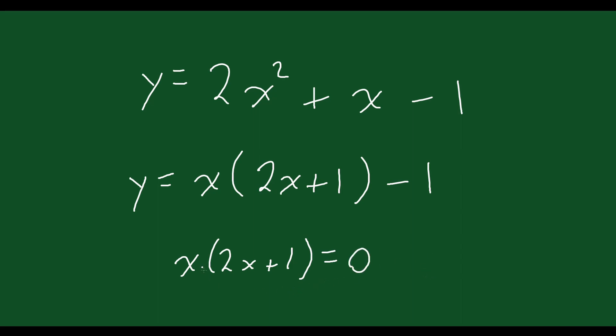And so what values of x would make this equal to 0? Well, this x here, if that x is equal to 0, you multiply, it all becomes 0, so that's one solution. And then over here, 2x plus 1 equals 0. If you solve for x in this case, you're going to get x equals negative 1 half. You bring over the 1, divide by 2, and you get negative 1 half.